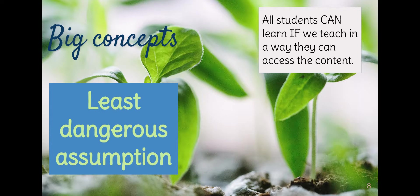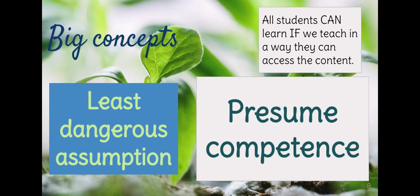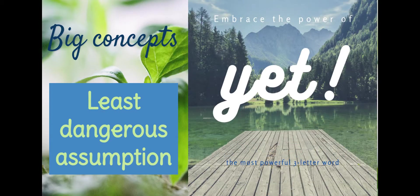We always want to look at every decision and make that least dangerous assumption — if we decide X, is this going to support Dan in being as independent as possible as an adult? That frame is super important. We want to go into every conversation knowing that every student can learn if we teach in a way that they can access the content. We are always going to presume competence and assume that there is something we can do — increasing communication supports, instructional supports, or behavioral supports — to help our students make progress. And that's the concept of embracing the power of yet. Dan might not be effectively using his communication system yet, but we're going to try this new strategy.